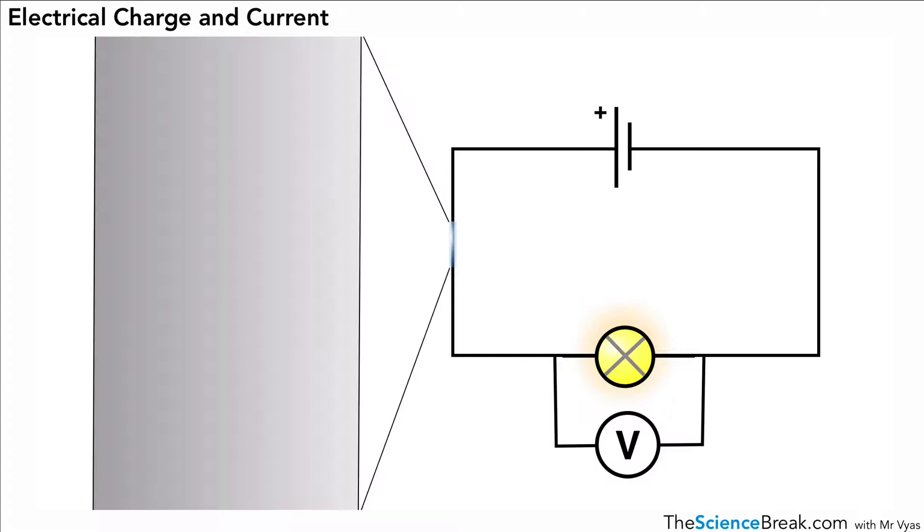Now each one of those electrons carries a little charge. And we can place an ammeter in the circuit to measure that rate of flow of charge, or we can measure the charge flowing through a point in a circuit. So there's our electrons. They're all flowing in that direction as we just saw, and our ammeter will measure the rate of flow of those electrons.